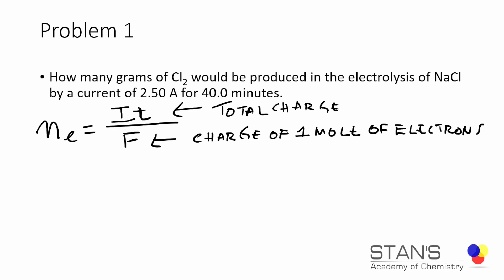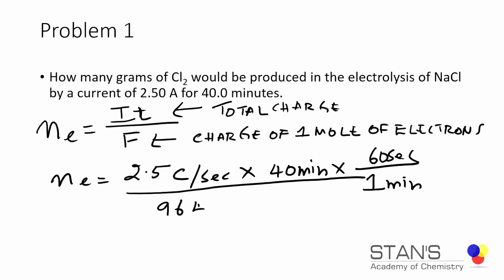When we divide the total charge by the charge of one mole of electrons, we will get the number of moles of electrons that are passing through the circuit during the chemical reaction. So we will substitute the numbers. ne is going to be equal to 2.5 amperes, which is coulombs per second, times 40 minutes, which we're going to convert into seconds. The conversion is one minute equals 60 seconds, divided by Faraday's constant which is 96,485.